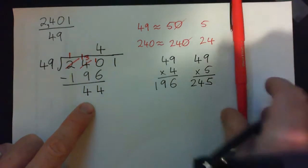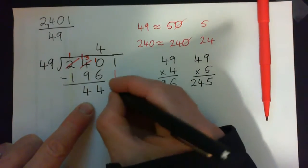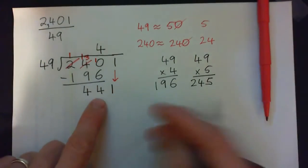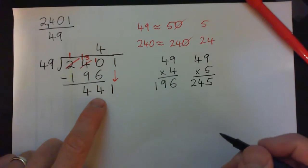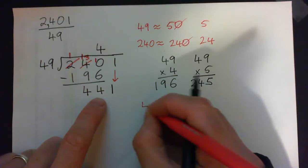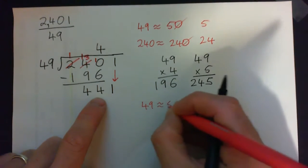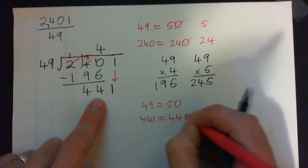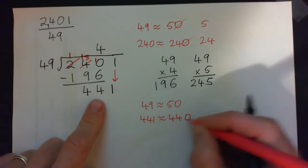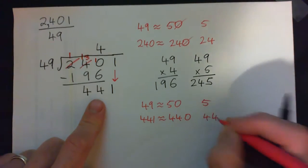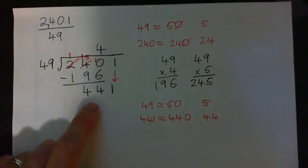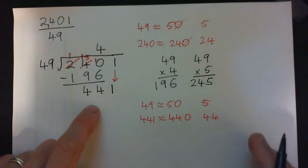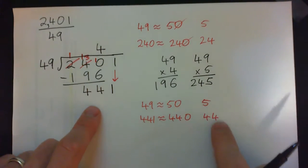So now we bring this 1 down. And we go 49 into 441 gives what? So again, you can go, well 49 is about 50, and 441 is about 440, so 50 into 440 is kind of like 5 into 44. 5 into 44 would go 8 times.